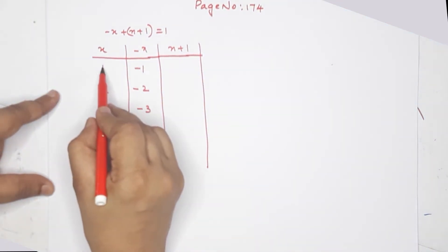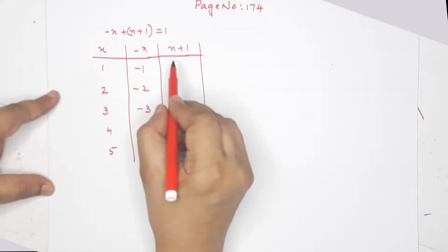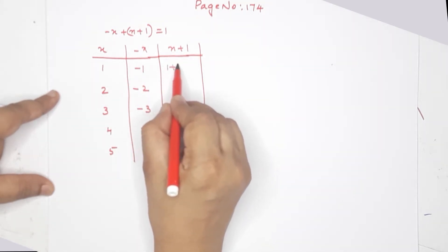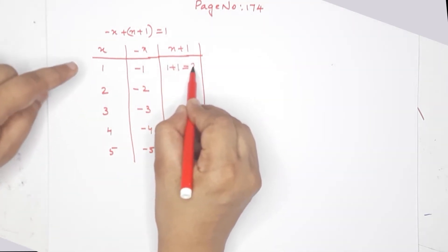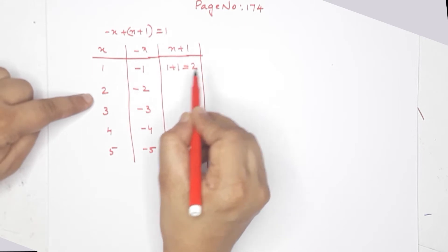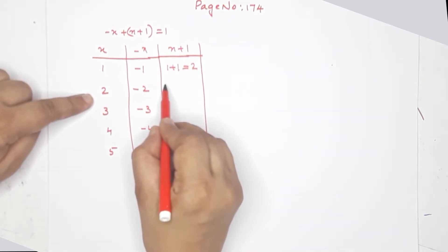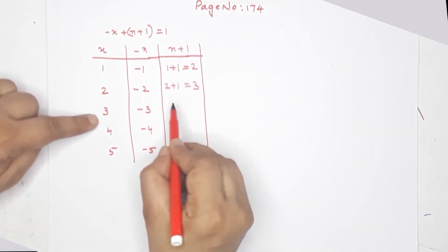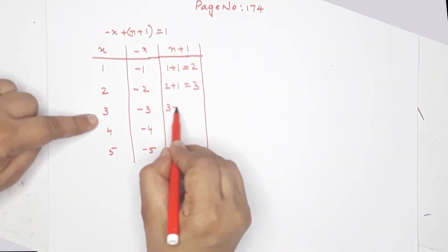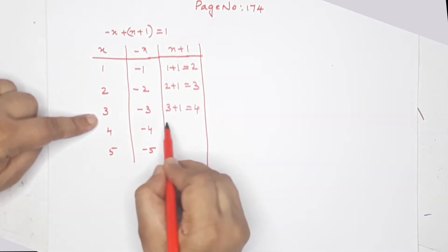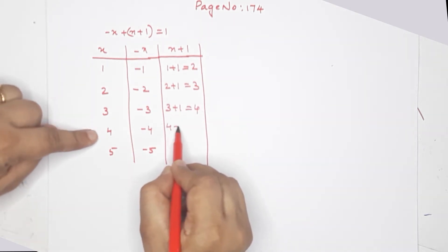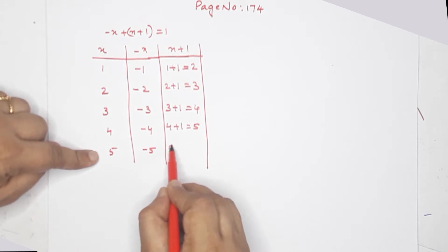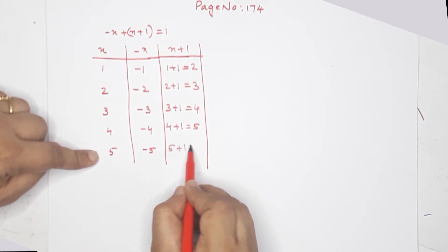x plus 1: when x is 1, that gives 2. When x is 2, 1 plus 1 is 2, then 2 plus 1 is 3, 3 plus 1 is 4, 4 plus 1 is 5, and 5 plus 1 is 6.